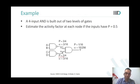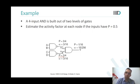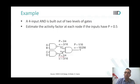A student asks: what if the two input gates are different, such as a NOR gate? The instructor says to just do it — it is not a hypothetical question. Solve it. At the second stage the probability would be different and some other number would come out. Just apply the method.